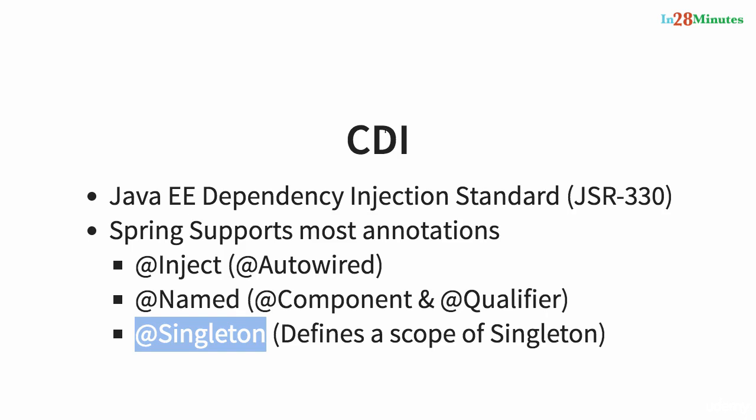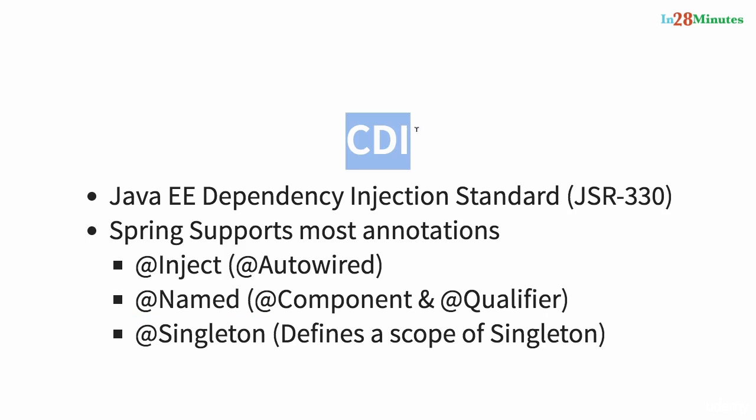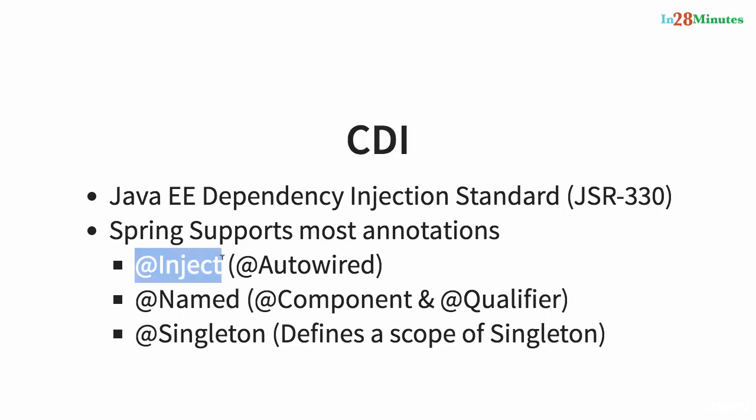A comparable thing would be JPA and Hibernate. JPA — Java Persistence API — defines the API, and Hibernate understands the API defined by JPA and provides the implementation. Similarly, CDI is an interface defining how to do dependency injection.